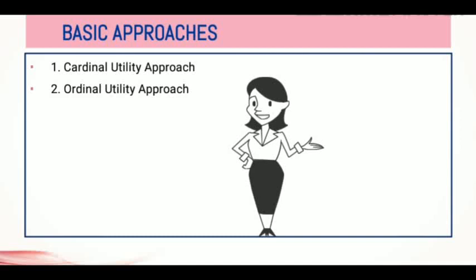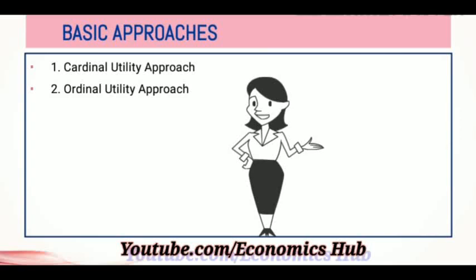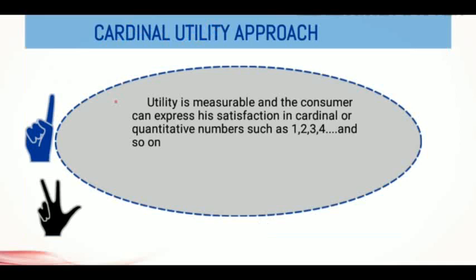The cardinal utility approach was propounded and used by neoclassical economists like Marshall, Jevons, Walras, and Edgeworth. Cardinal analysis offers a technique to measure utility. They say the amount of money a consumer is willing to pay for a commodity represents the utility of that commodity. In the cardinal utility approach, utility is measurable and the consumer can express his satisfaction in cardinal or quantitative numbers such as 1, 2, 3, and so on.